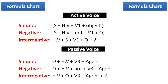This is the formula chart of future simple tense. To make a simple active sentence: Subject + helping verb (will/shall) + first form of verb + Object. Negative: Subject + helping verb + not + first form of verb + Object. Interrogative: helping verb + Subject + first form of verb + Object. For passive: simple — Object + helping verb (will be) + third form + agent. Negative — Object + will/shall + not + be + third form + agent. Interrogative — helping verb + object + third form + agent.